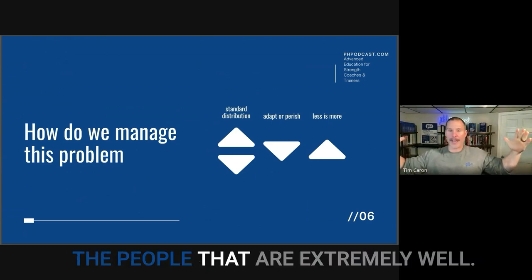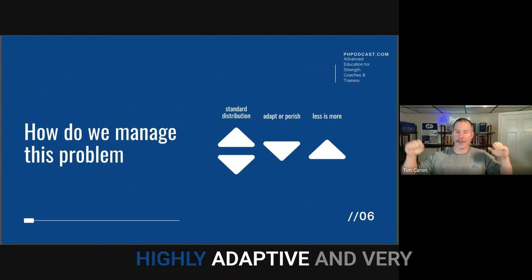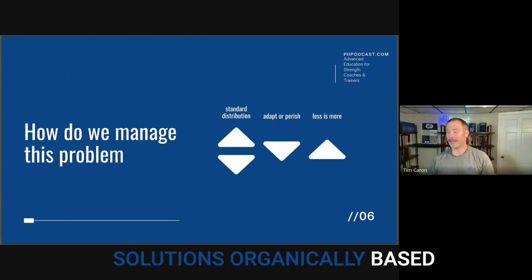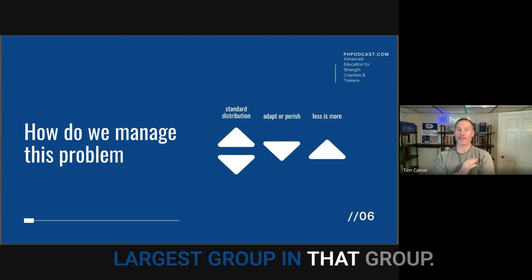And then we're going to let the people that are extremely highly adaptive and very poorly adaptive kind of find solutions organically based off of where they're going. But we're going to address the largest group in that group.